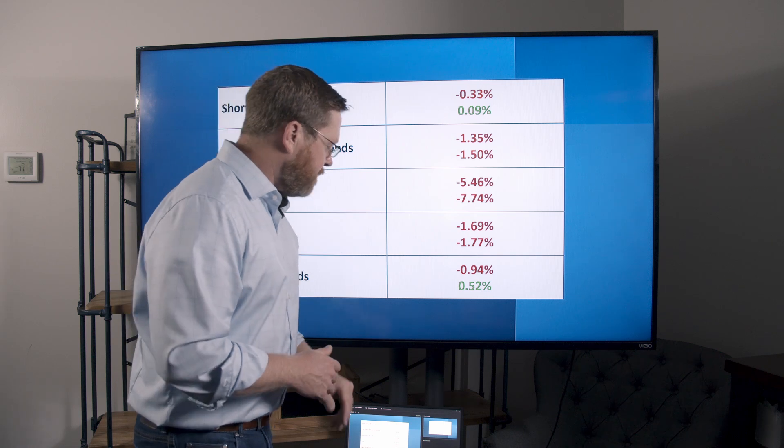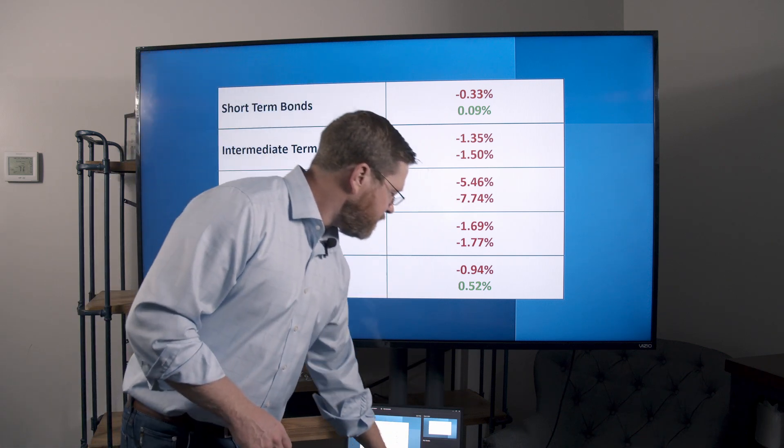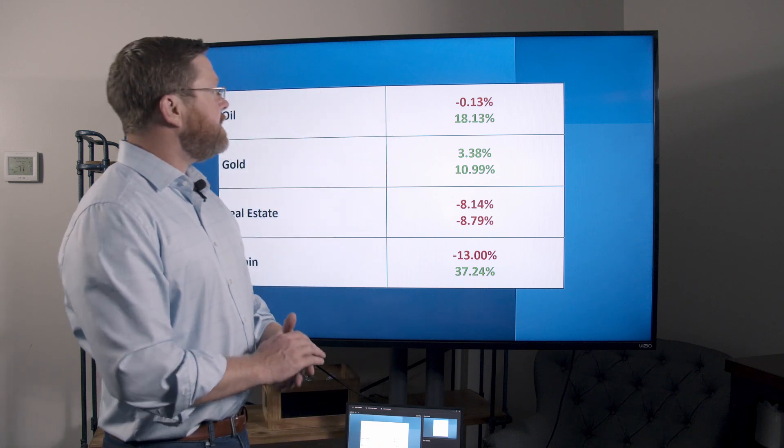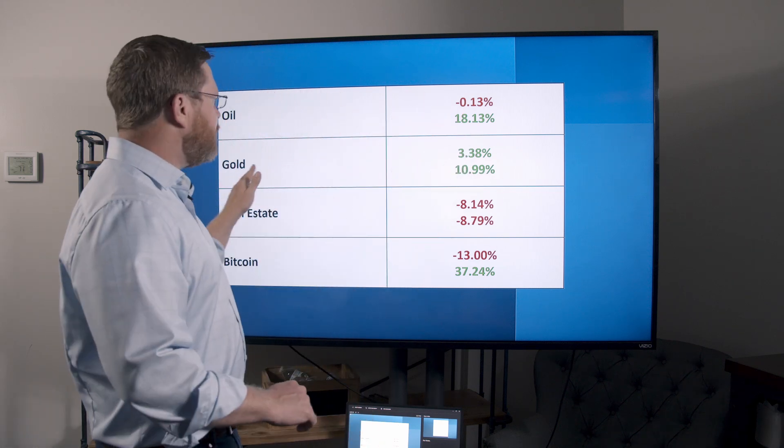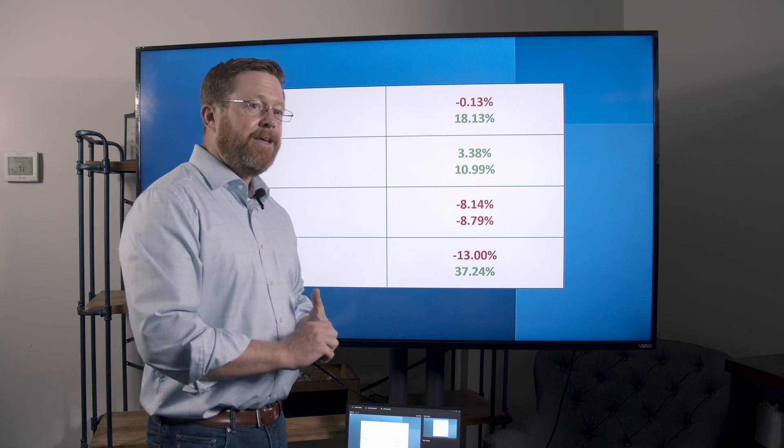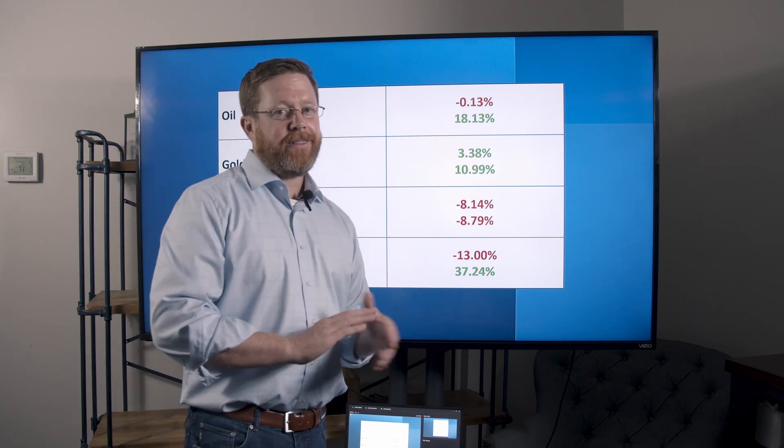Everything was down in the month of April. The only thing positive are short-terms and high yields. So commodities, oil just kind of flat. Gets worse in May. But gold continuing to climb. Inflation. So that's the hedge.